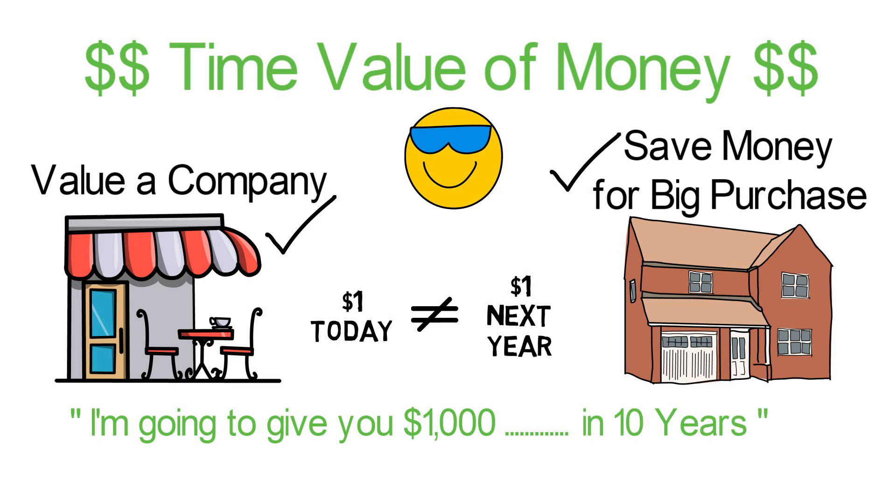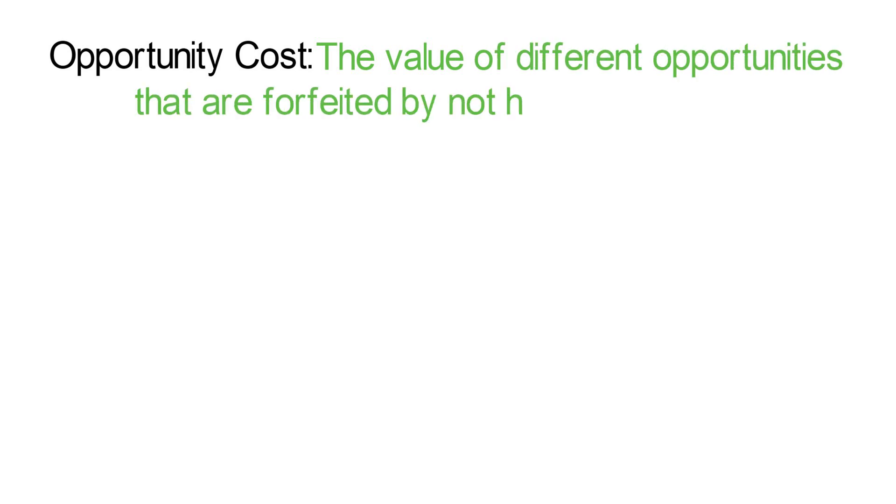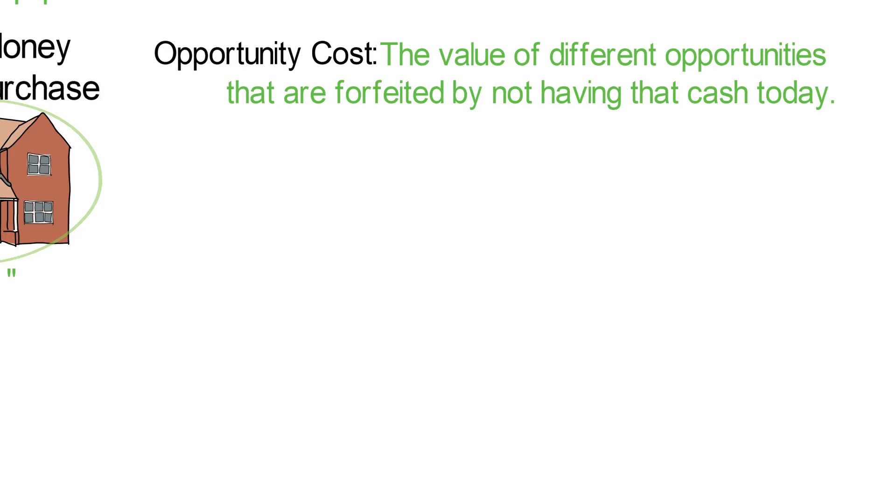Well, that changes everything. I have no idea of what I would do with it in 10 years. But I knew what I would do with it now. I was going to save for a house. Now, the time value of money matters more than just knowing what you're going to do with it or not. In fact, $1,000 today is actually worth more than $1,000 in 10 years. Much of the difference in value revolves around what is known as opportunity cost. Opportunity cost is the value of different opportunities that were forfeited by not having that cash today.